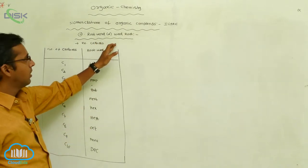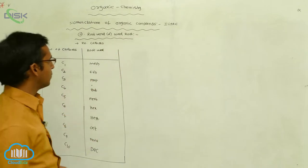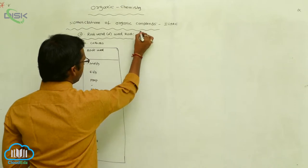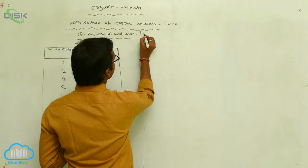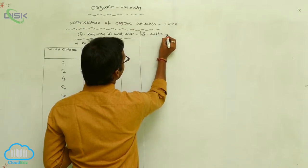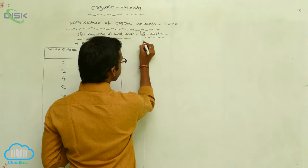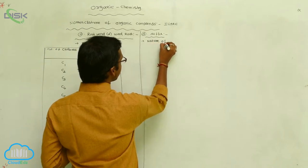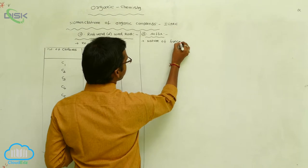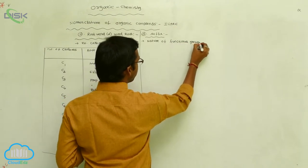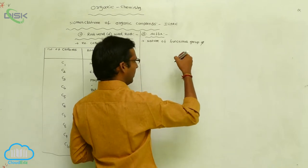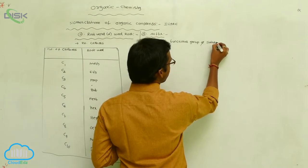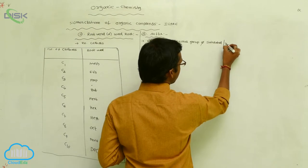After the root word, the third step is the suffix. The suffix explains the nature of the functional group — which type of functional group is present — and also whether the compound is saturated or unsaturated.